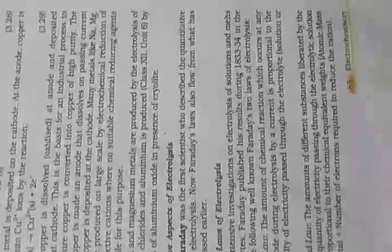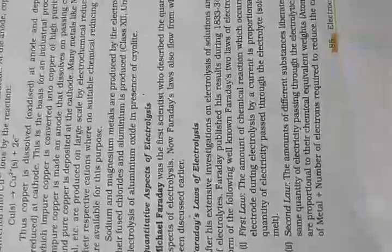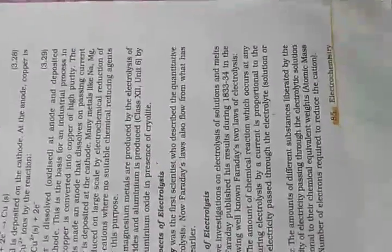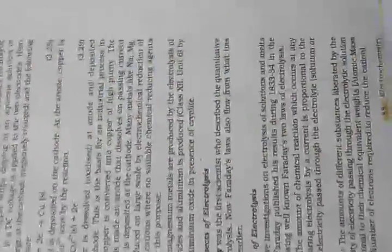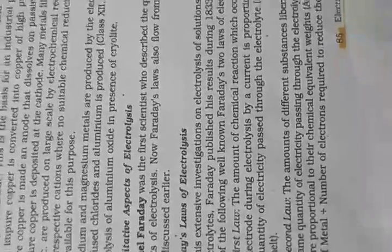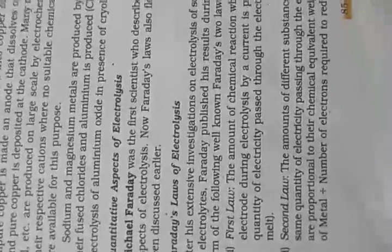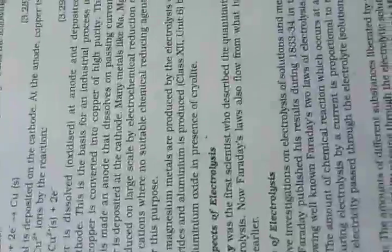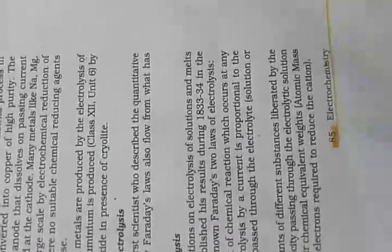Earlier I taught you how impure metals are converted to pure metals. Now, Faraday's First Law: the amount of chemical reaction which occurs at any electrode during electrolysis — by a current — is proportional to the quantity of electricity passed through the electrolyte solution or melt. So the amount of chemical reaction at any electrode is proportional to the quantity of electricity passed.